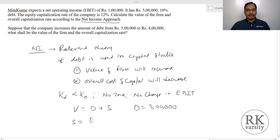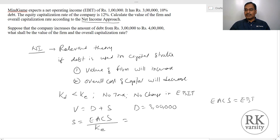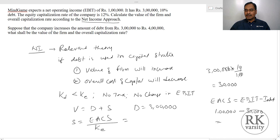Market value of equity equals earnings available to common shareholders divided by the equity capitalization rate. Earnings available to common shareholders equals EBIT minus interest. EBIT is 1 lakh, minus interest which is 10% of 3 lakhs, equals 30,000.